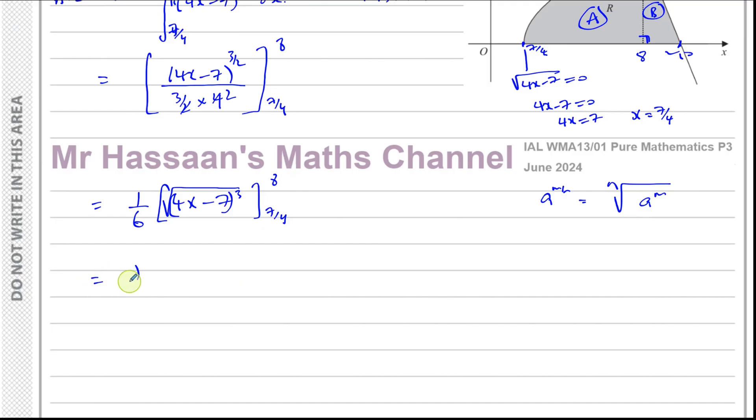So we have 1 over 6 times the square root of, now 4 times 8 is 32, 32 minus 7 is 25. So the square root of 25 cubed. And you're going to have minus, and then we're going to put 7 over 4 in here. So 4 times 7 over 4, they cancel out. We end up with 7 minus 7, which is 0.